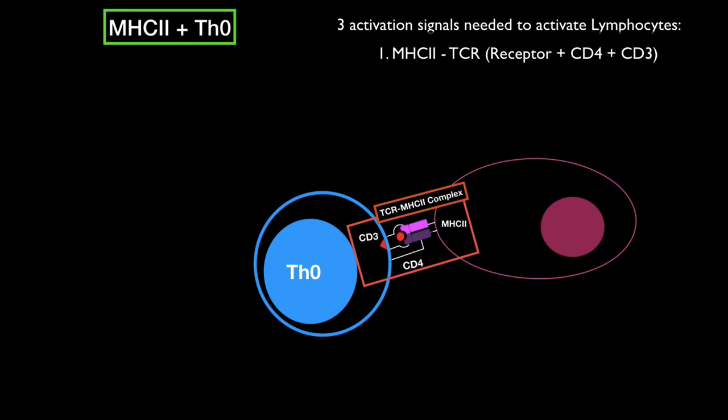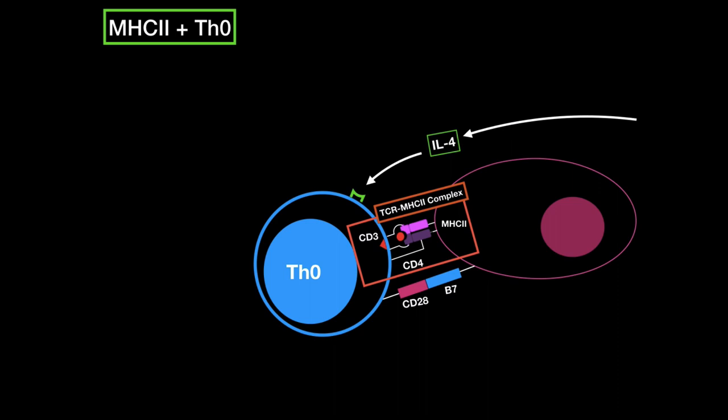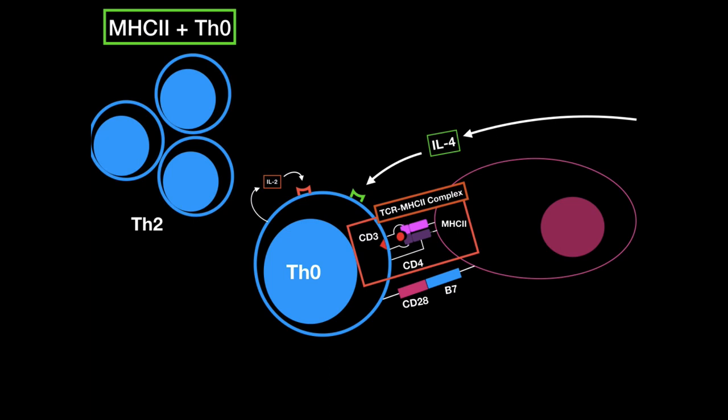The second activation signal is a binding between B7 and CD28. The third activation signal is interleukin-4 coming from mast cells, other TH2 cells, or basophils. Now the cell is triggered and it wants to grow. It can only grow once it releases interleukin-2, which binds to its own surface — this process is called autocrine function. Once it receives interleukin-2, it grows and undergoes clonal expansion and differentiation into active TH2 cells, also called effector TH2 cells.